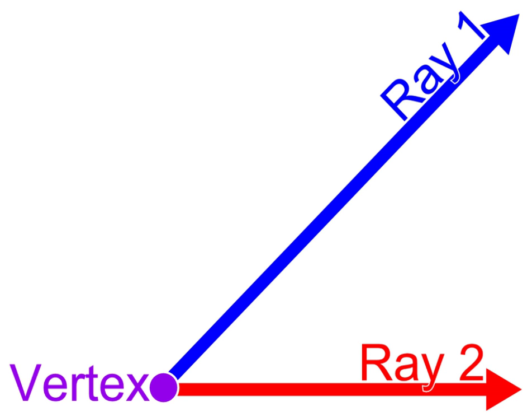The angle between two planes, such as two adjacent faces of a polyhedron, is called a dihedral angle. It may be defined as the acute angle between two lines normal to the planes. The angle between a plane and an intersecting straight line is equal to 90 degrees minus the angle between the intersecting line and the line that goes through the point of intersection and is normal to the plane.